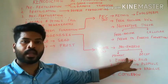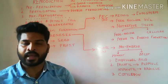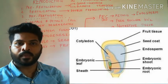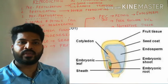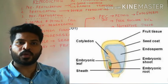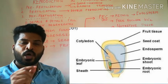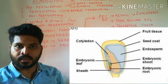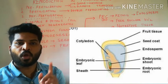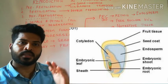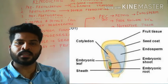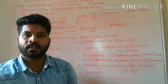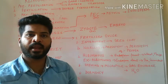In the case of monocot embryo, as you can see in the diagram, the radicle is covered by the root cap, which is covered once again by an undifferentiated sheath called the coleorhiza. Similarly, the plumule is covered by what is known as the coleoptile, and you can find the single cotyledon positioned to the lateral side of the embryo called the scutellum. Once endosperm development takes place, the zygote undergoes embryogenesis and the embryo is formed.